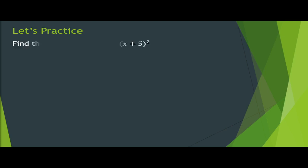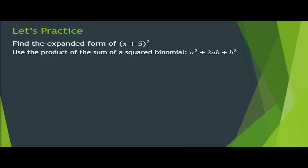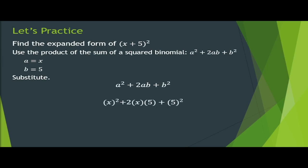Let's practice. Find the expanded form of (x + 5) raised to the power of 2. Use the product of the sum of the squared binomial, which is a squared plus 2ab plus b squared. Don't forget to get the values of a and b: a is equal to x and b is equal to 5. Substitute into the formula. Now we have x squared plus 2 times x times 5 plus 5 raised to the power of 2. Simplify, and now we have the answer: x squared plus 10x plus 25.